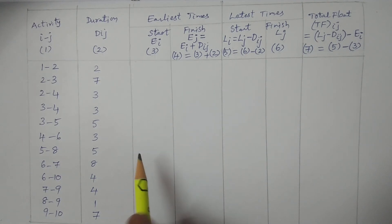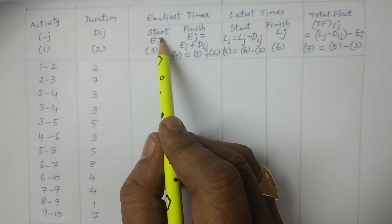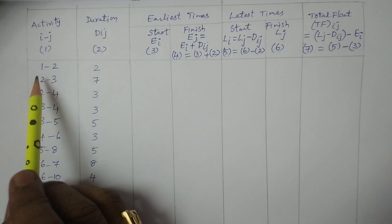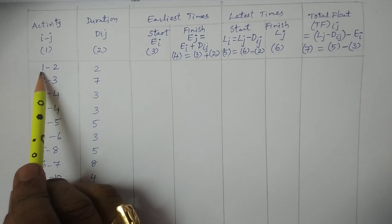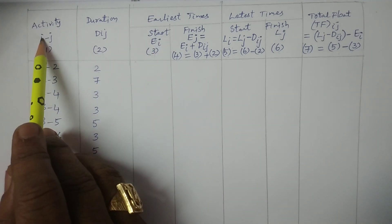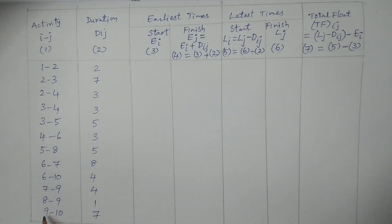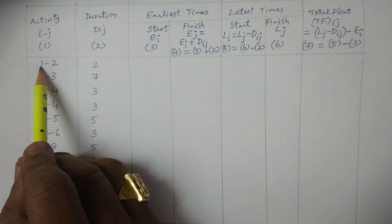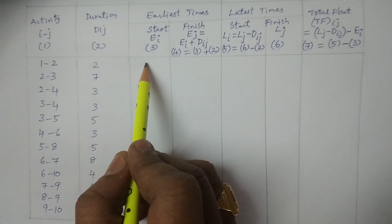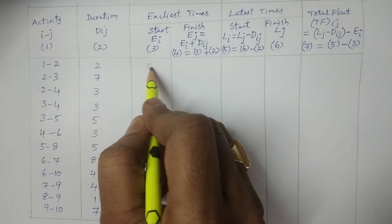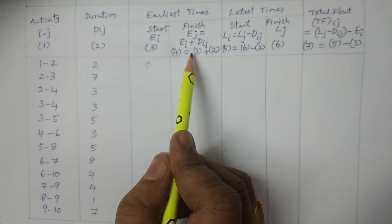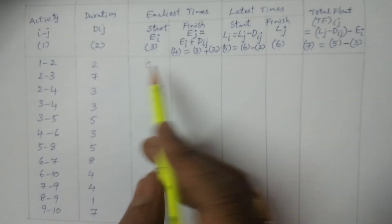Now start the calculations. First, for EI: always observe what events are here. EI means I; these are the values of I, and J values follow. E1 value is considered as 0. EJ equals addition of the second and third columns: 0 plus 2 equals 2. So EJ where J equals 2 gives E2 equals 2.